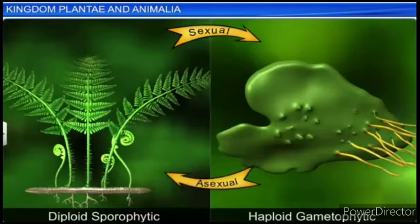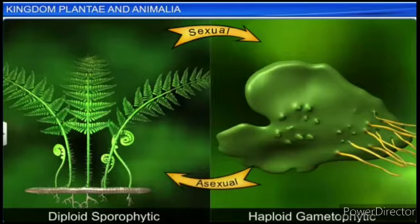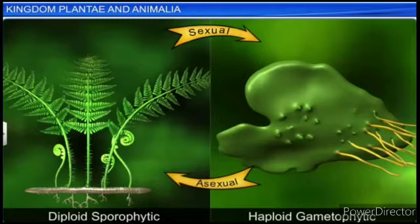The life cycle of plants has two distinct phases: the diploid sporophytic and the haploid gametophytic. The sporophytic phase produces spores, and the gametophytic phase contains gametes. These alternate with each other. The length of the haploid and diploid phases, and whether these phases are free-living or dependent on others, varies among different plant groups. This phenomenon is called alternation of generation.